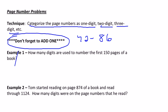Example one, how many digits are used for the first 150 pages? Well, that gives us three categories. Category one is one digit numbers. And when you're looking at one digit numbers, the one digit numbers are just one through nine. And so there are nine one digit numbers. And we multiply that by one because each of those pages has one digit.